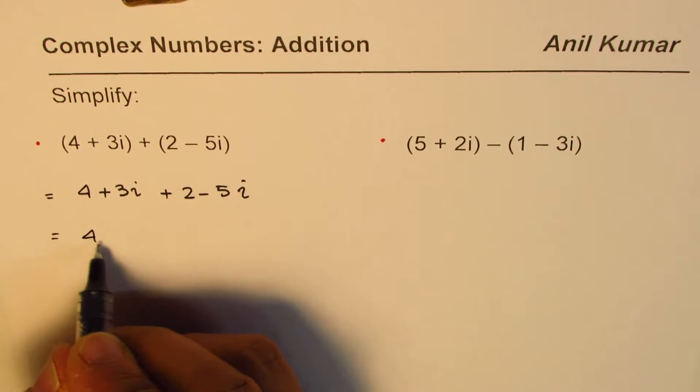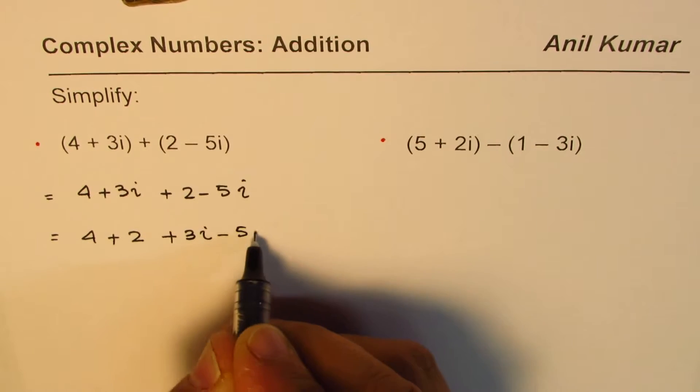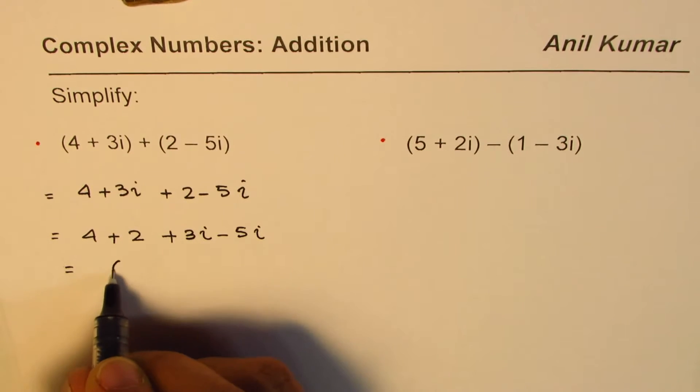So we get 4 + 2 (these are the real terms) plus 3i - 5i. 4 + 2 is 6, and this is -2i.